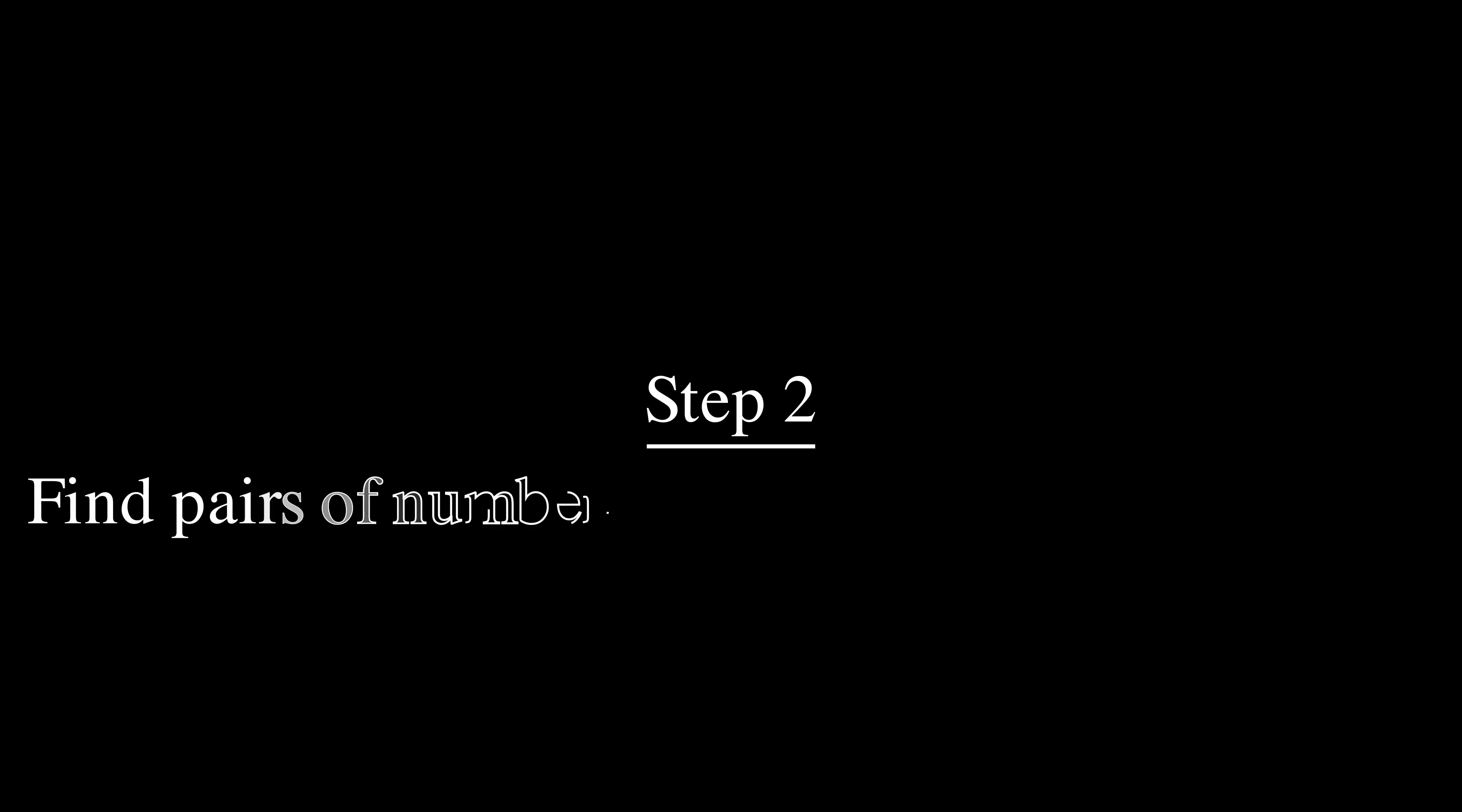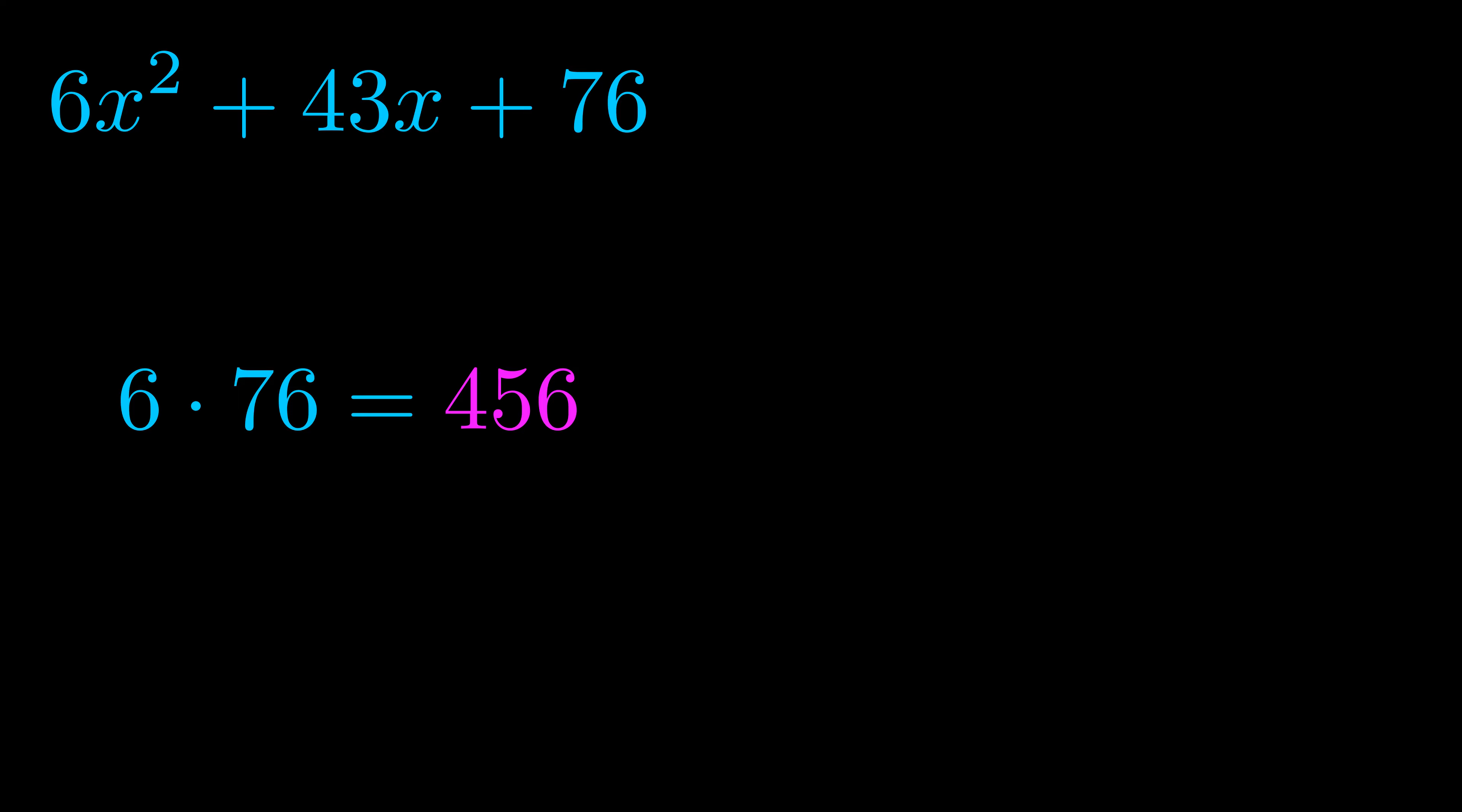Step two is to try to find all of the pairs which multiply to this number. Now it turns out you don't really need to find all of them, but go ahead and write down as many numbers as you can that multiply to the magenta value for now.